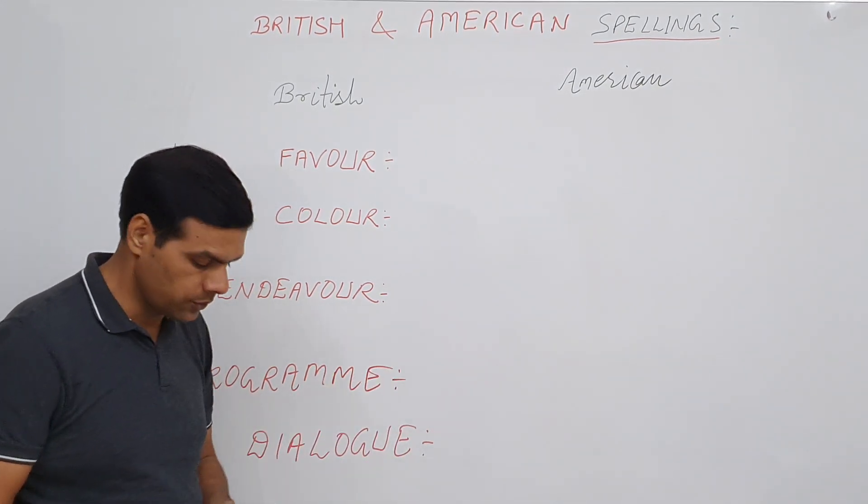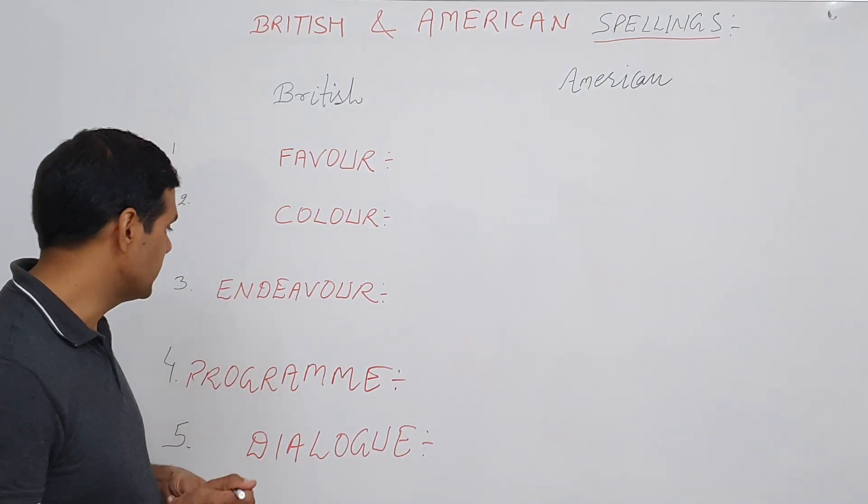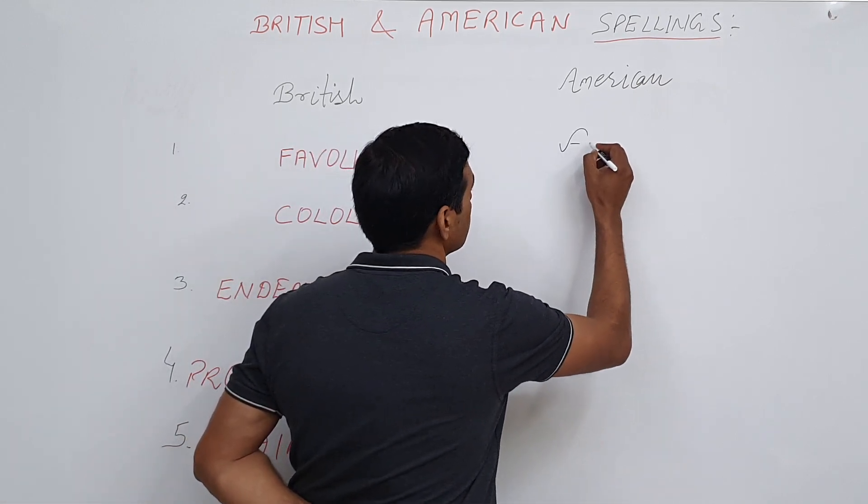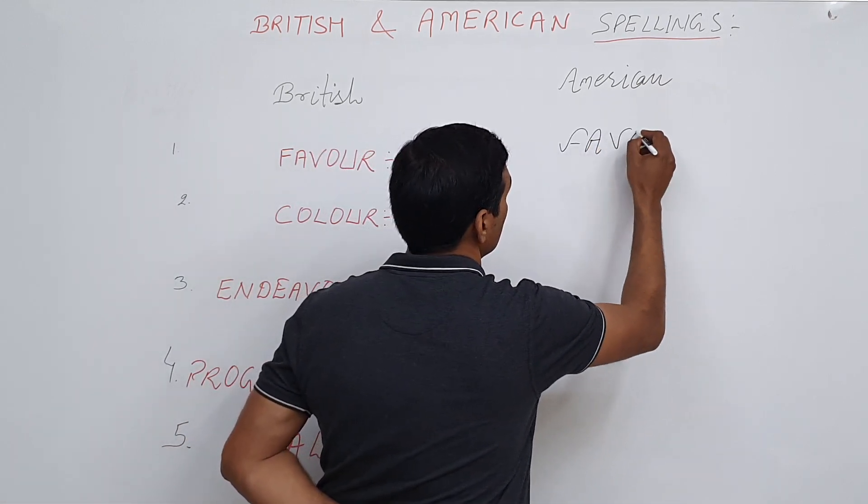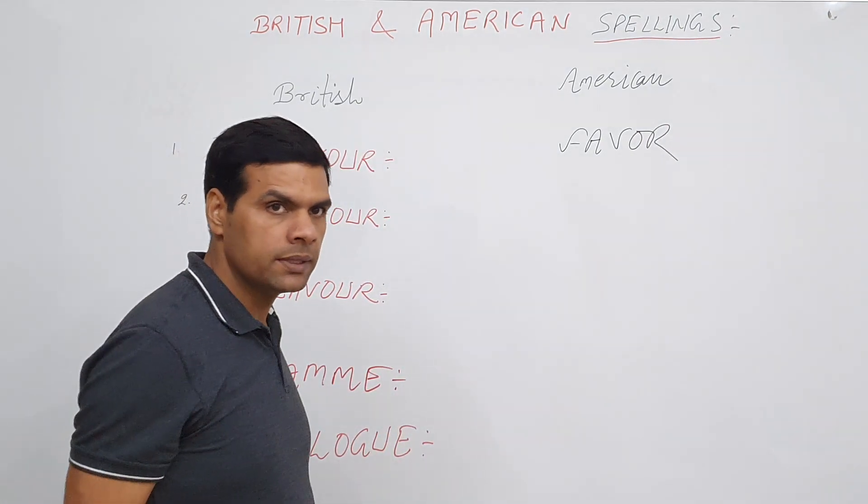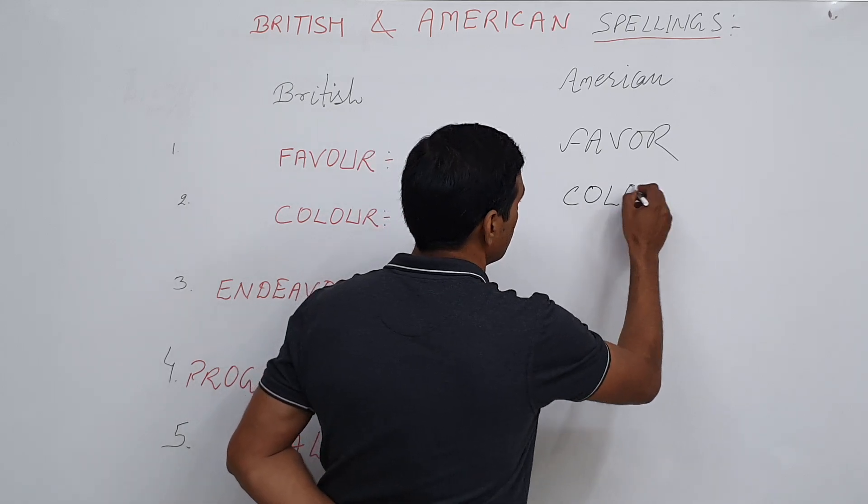Now, how do the Americans spell these words? Let's see. Favour becomes F-A-V-O-R, so 'U' has simply been dropped. Next word, colour, becomes C-O-L-O-R. 'U' again gets dropped.